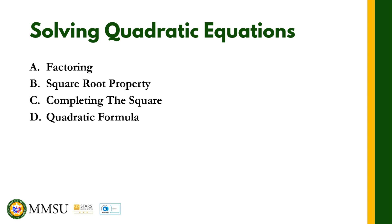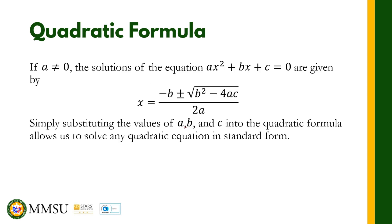I will just state here that the quadratic formula is x equals negative b plus or minus the square root of b squared minus 4ac, all over 2a. So if a quadratic equation is written in standard form ax squared plus bx plus c, we just need to identify the values of a, b, and c and plug in or substitute these values.